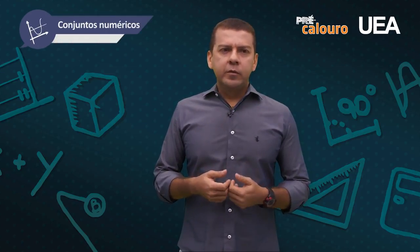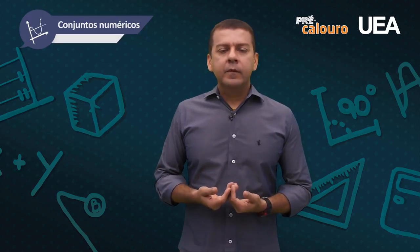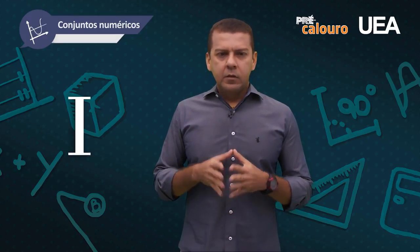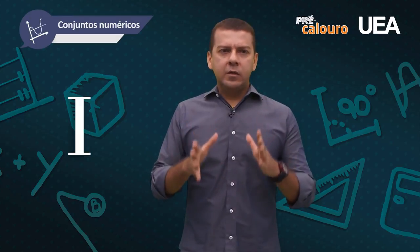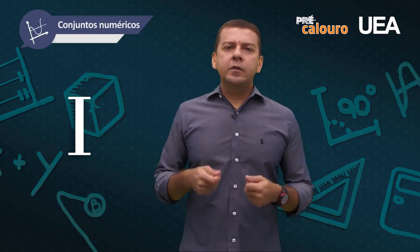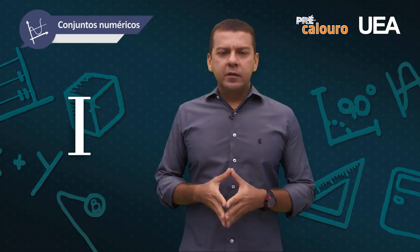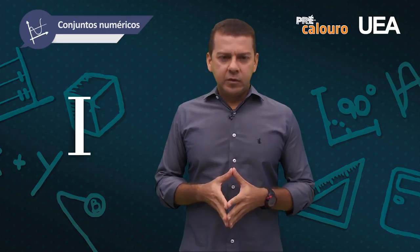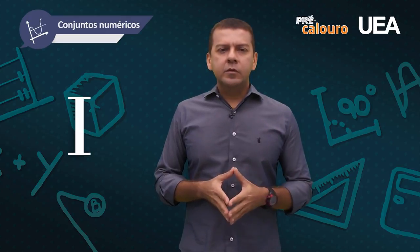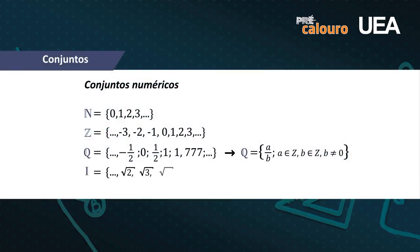Se o número não é racional, ele será irracional. Todo número que pode ser escrito na forma A sobre B é racional. Se não pode ser escrito nessa forma, é irracional — são números que não possuem raízes exatas, como raiz de 2, raiz quadrada de 3, raiz quadrada de 5, e o pi. São números que não podem ser escritos na forma fracionária.